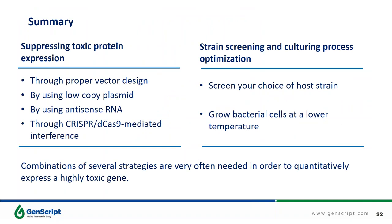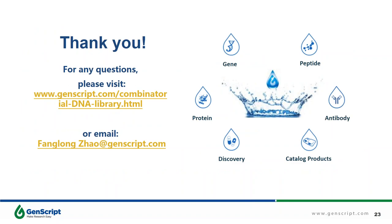Let's make a summary. Today, we talked about how to identify and predict toxic genes in cloning experiments. I provided some special methods and genetic tools to ensure your project goes smoothly. You can use several genetic tools to suppress toxic gene expression. As alternative options, you can consider using special E. coli hosts and culture methods for cloning toxic genes. It is important to note that these methods are not universal for all toxic genes — you should try to find the best one for your case. Combinations of several methods are often needed to express a highly toxic gene. Good luck to your experiment. Thank you very much for your attention.